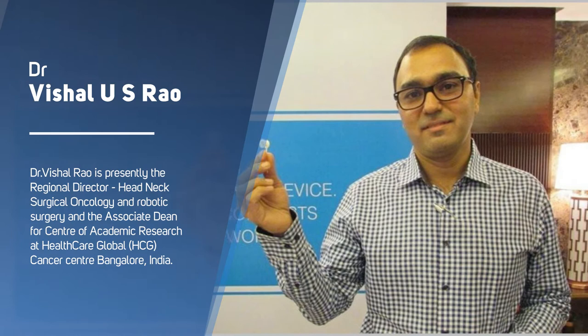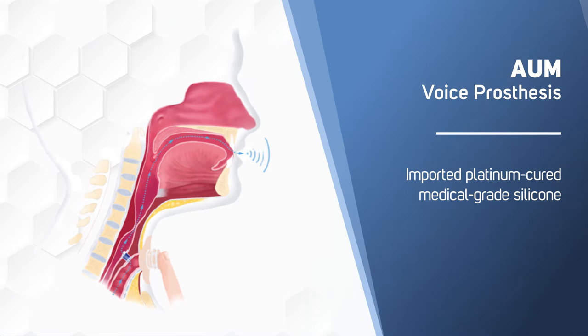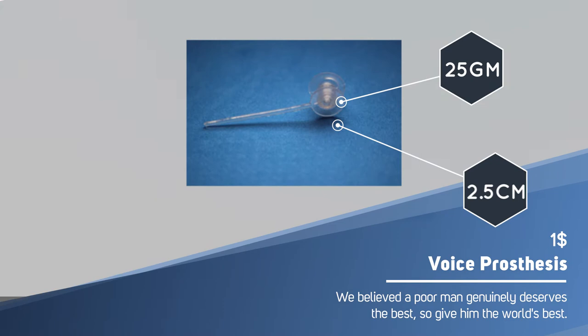But Dr. Vishal Rao has developed a prosthesis which cost only 50 Indian rupees which is less than $1. This device is called Ohm voice prosthesis. He used imported platinum cured medical grade silicon and other materials to develop the tiny Ohm voice prosthesis which weighs around 25 grams and measures 2.5 cm in length.